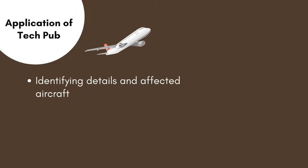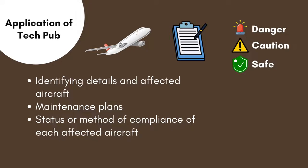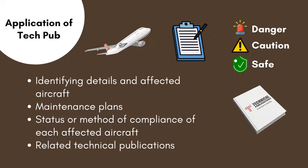Its applications track the following information: Identification details, Affected Aircrafts, Maintenance Plan which includes Task Card and Job Card for implementing the work, Status or Method of Compliance of each Affected Aircraft, and Related Technical Publications.